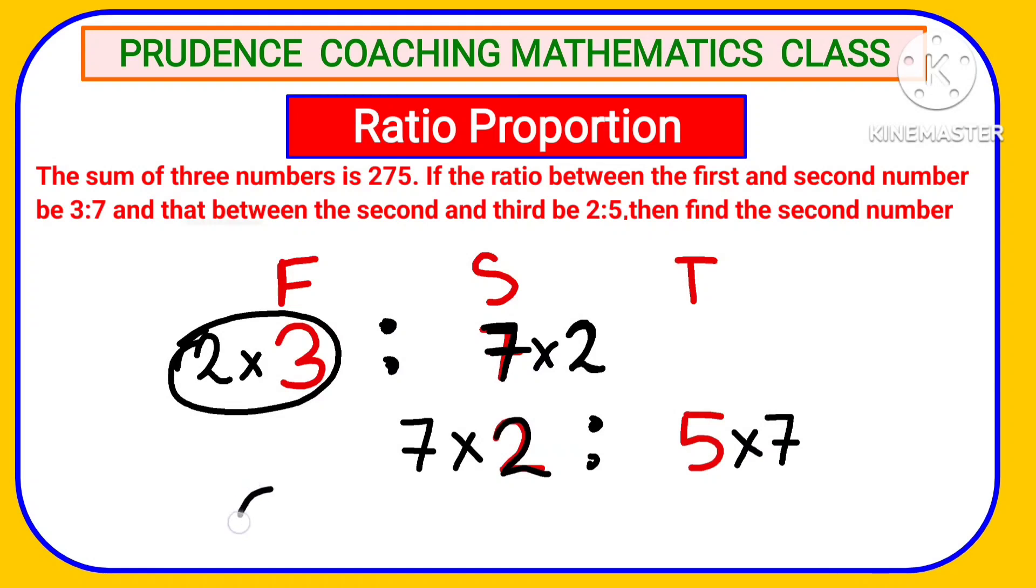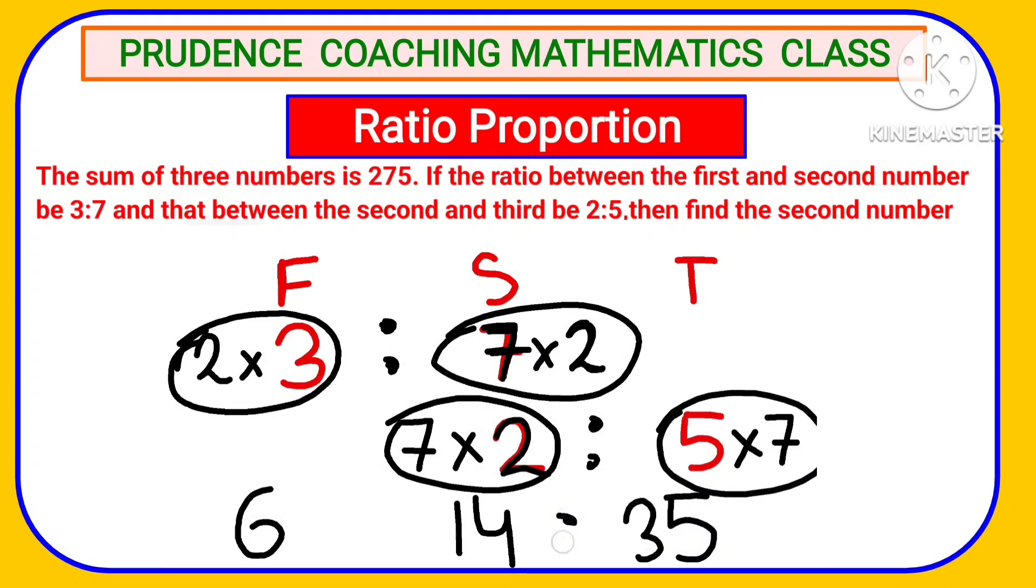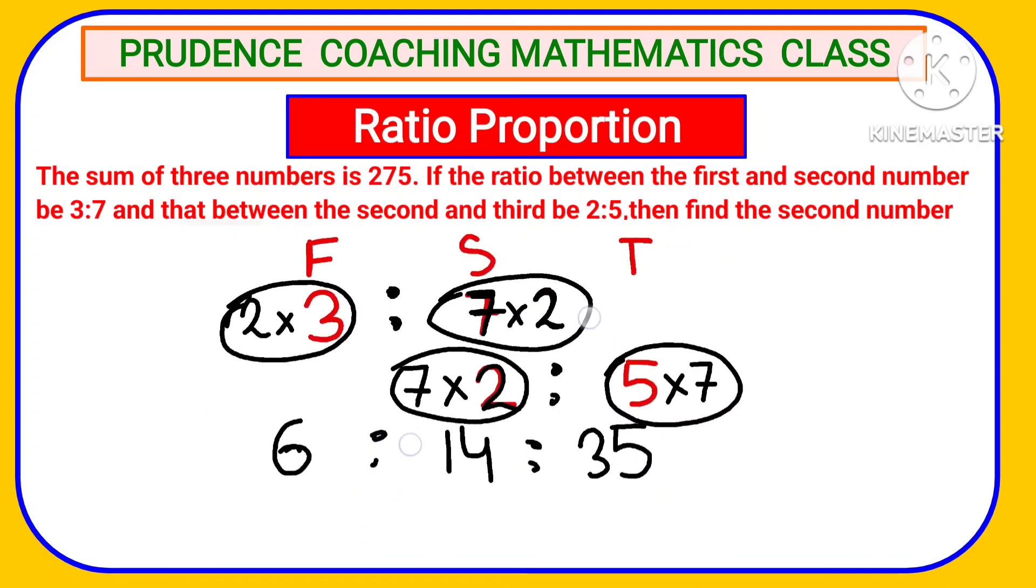So here also we need to multiply by 7. So you are getting the first number in ratio, that is 3×2=6, and the second number in ratio, that is 7×2=14 in both the places. And here we have 5×7=35 as the third number in unit. This is the unit value or value in ratio.